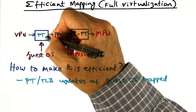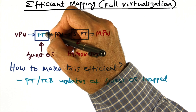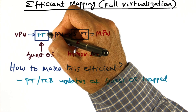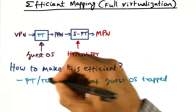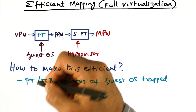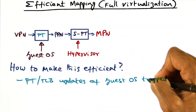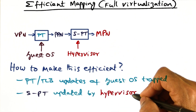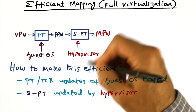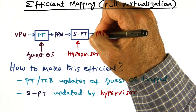Updating the page table is a privileged instruction. So when the guest operating system tries to update the page table — or what it thinks is the page table — it will result in a trap. Any time the guest operating system tries to update this page table to establish a mapping between VPN and PPN, there will be a trap. This trap is caught by the hypervisor, and what the hypervisor is going to do is recognize that this particular VPN corresponds to a specific entry in the shadow page table.